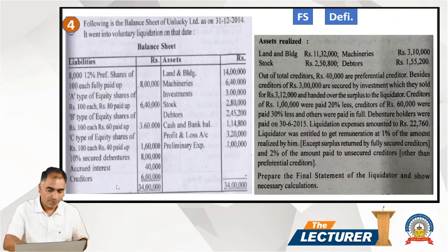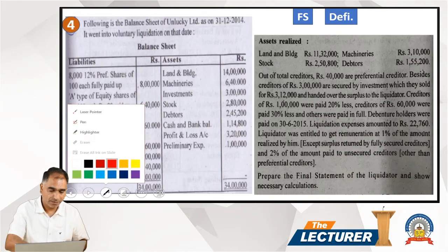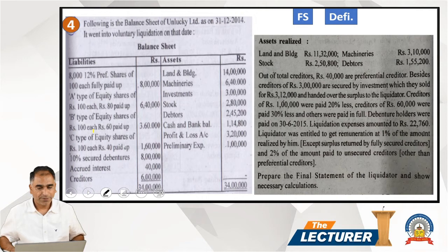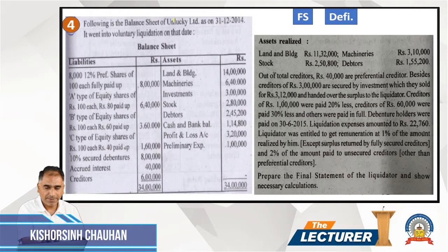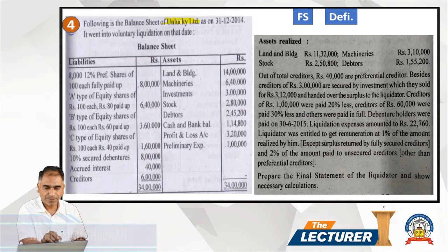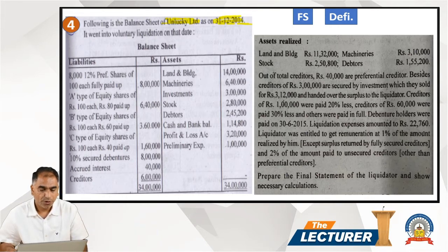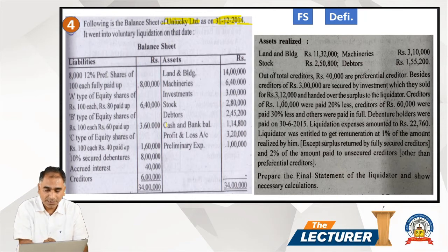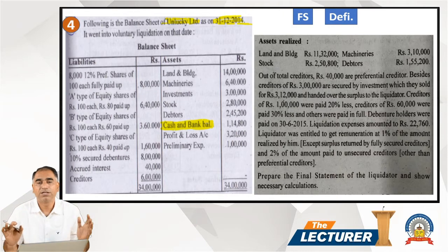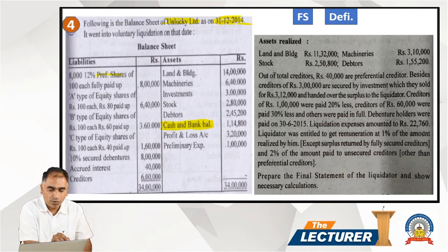Hello students, we have one more question on the liquidation of a company. We have been given the balance sheet of Unlucky Limited as of 31st December 2014, when it went into voluntary liquidation. A very important thing to find out from the balance sheet is the cash and bank balance, and then identify the classes of liabilities: preference share capital, secured, and unsecured liabilities.